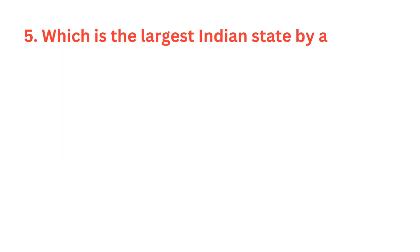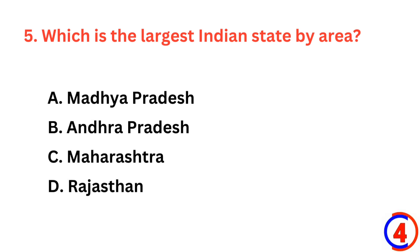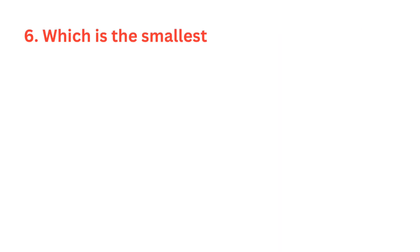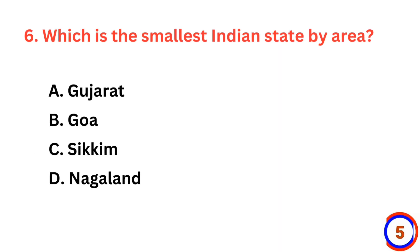Which is the largest Indian state by area? The correct answer is option D, Rajasthan. Which is the smallest Indian state by area? The correct answer is option B, Goa.